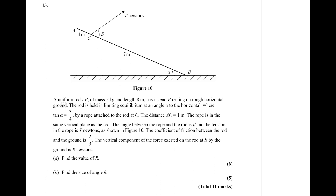Let us read the question once again and then label our diagram. A uniform rod AB of mass 5 kg — uniform means the mass is right at the center. So this rod is given to us, which is 8 meters long. From either side, 4 meters will be the position of the center, and at that center we have a mass acting in the downward direction — 5 kg.